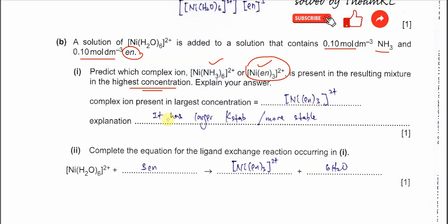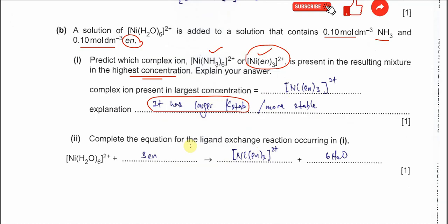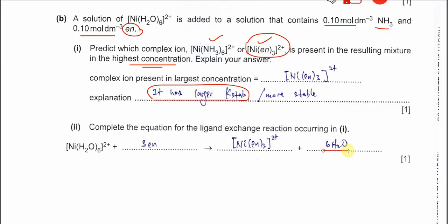The explanation is very easy. You just say the K_stab is larger. Larger K_stab means the complex that forms, the complex ion that forms, is more stable. Part 2: Complete the equation for the ligand exchange in part 1. I told you already, this is hexa aqua nickel with the 3 EN, and it forms the new complex ion with the sixth water.